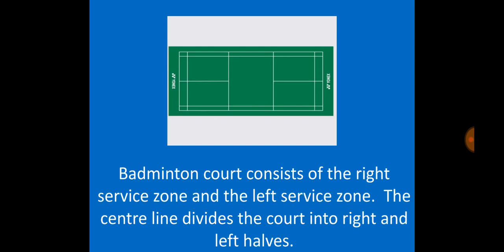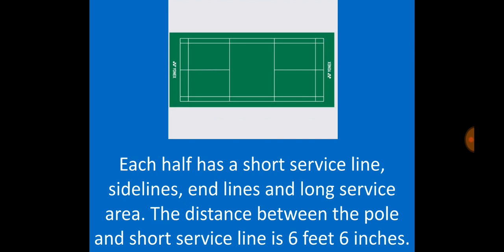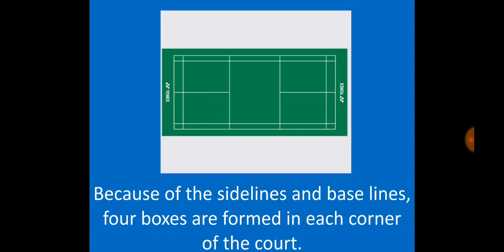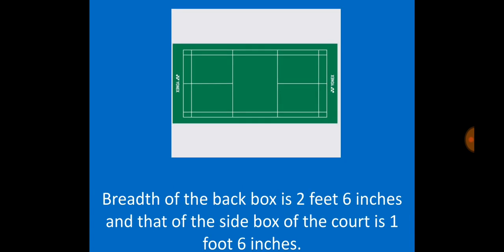The poles are fixed on either side of the net and the height of each pole is 1.55 meters. The badminton court consists of the right service zone and the left service zone. The center line divides the court into right and left halves. Each half has a short service line, side lines, end lines, and long service area. The distance between the pole and short service line is 6 feet 6 inches. Because of the side lines and base lines, four boxes are formed in each corner of the court. The breadth of the back box is 2 feet 6 inches and that of the side box is 1 foot 6 inches.